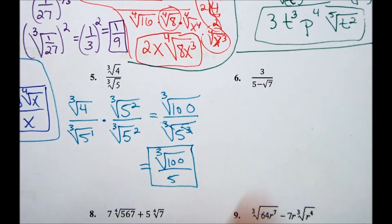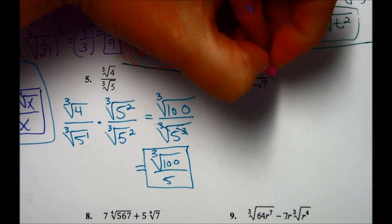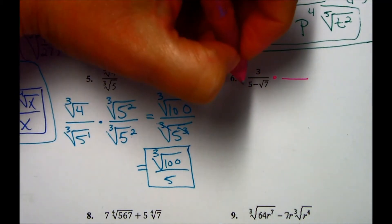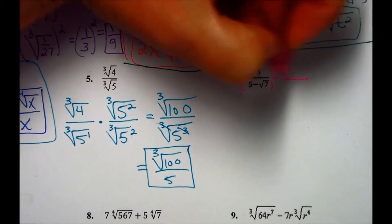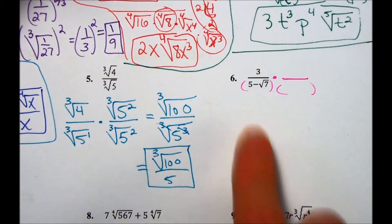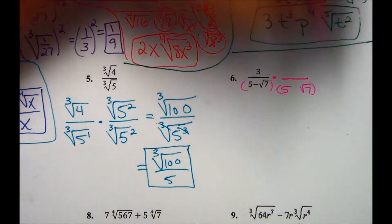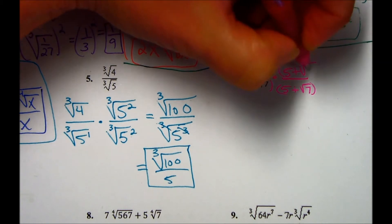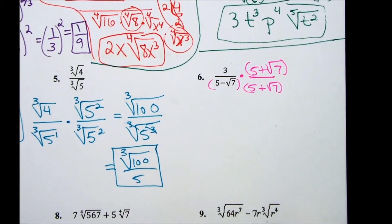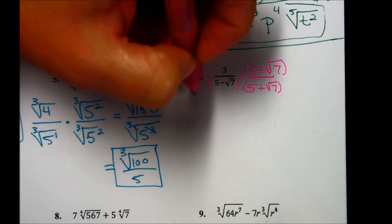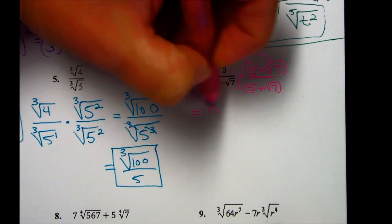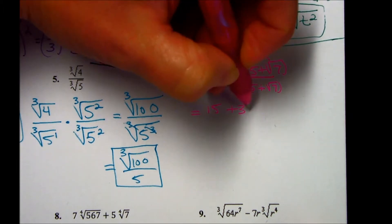Number 6 has a binomial in the denominator with a radical, so we need to multiply by its conjugate — this is different from the last two. Because it's a binomial, we multiply by its conjugate: another binomial with the same numbers but the opposite sign (negative becomes positive). Whatever you multiply the denominator by, you multiply the numerator by also. For the numerator: 3 times 5 gives 15, and 3 times the square root of 7 gives 3 square root of 7.